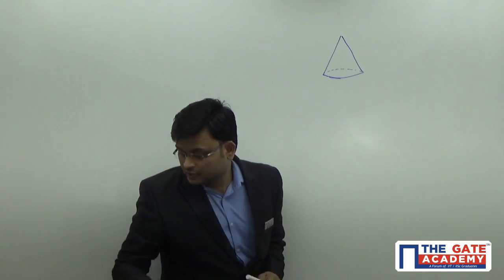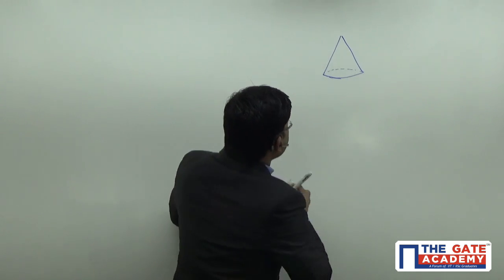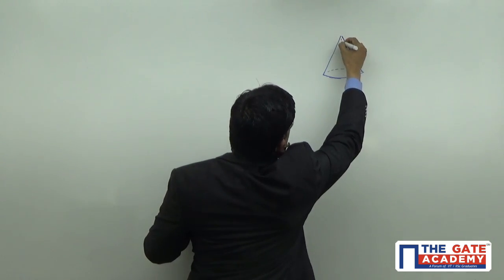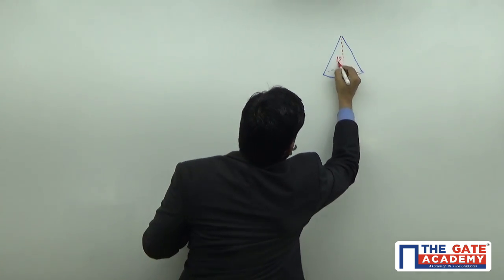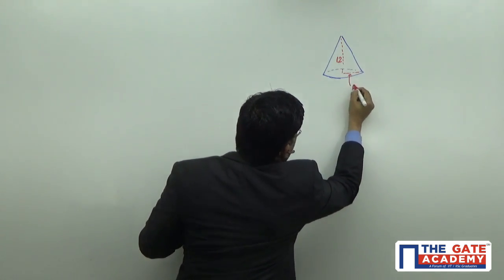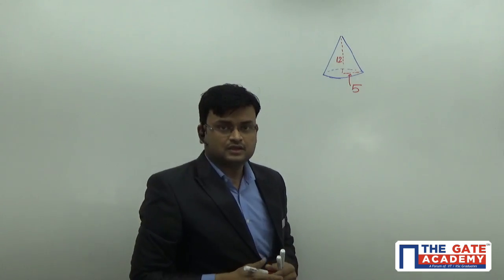This is one cone. Now, what is the height given in the question? That is 12 and the radius is 5. Now, the question is very simple.